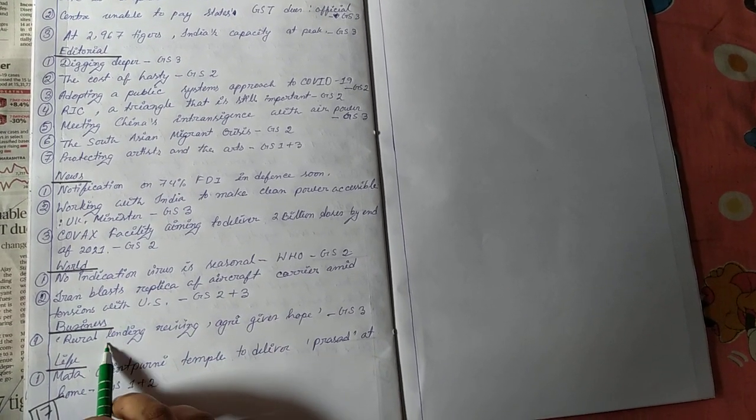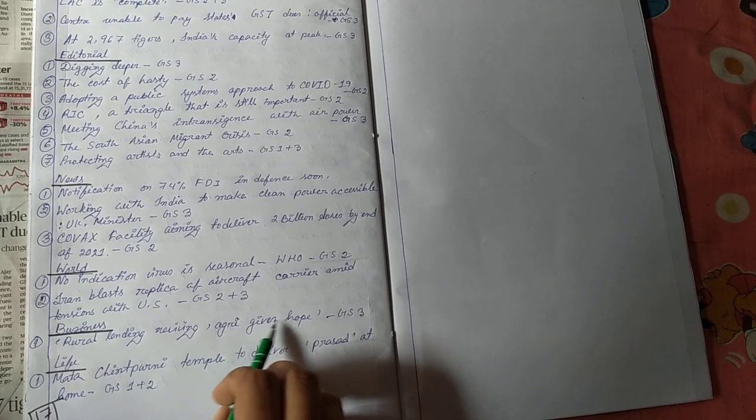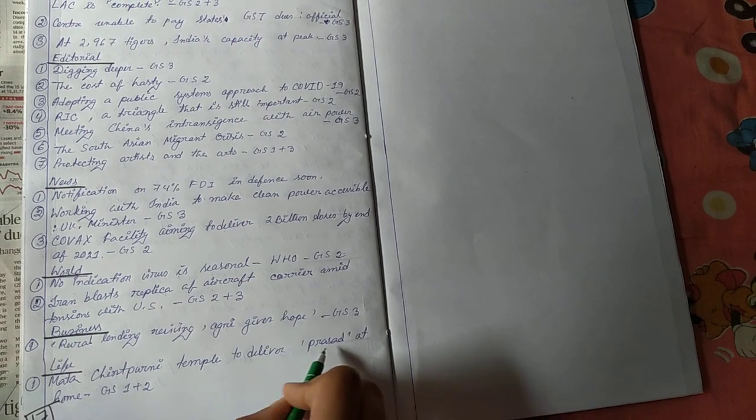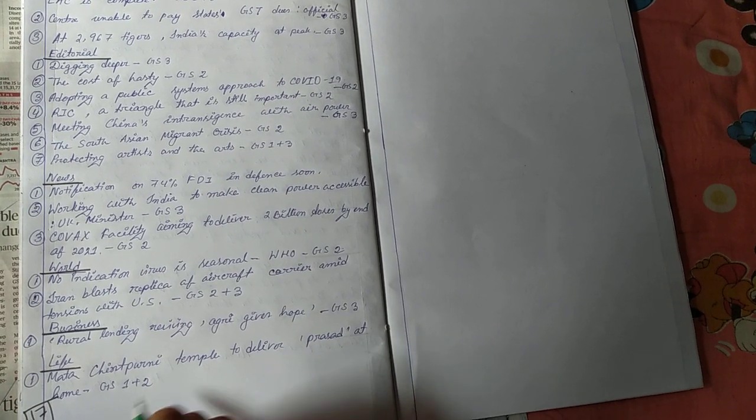Then the business, rural lending reviving, Agri gives hope, GS paper 3. Then the life page, Matachintpurni temple to deliver Prashad at home, GS paper 1 and 2, both.